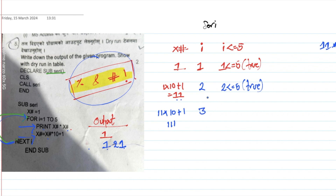3 is less than or equal to 5 — True! We move here. We are now at iteration 3 with the value of xx. xx into xx gives us 111. So 111 into 111 — the value continues to build.